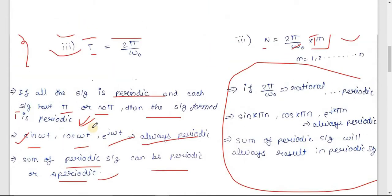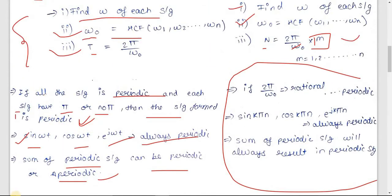To summarize for continuous time signals: first check if all terms are periodic. If so, use Rule 2 (sum of periodic signals can be periodic or aperiodic), then apply Rule 3 — if all terms are in the same format (all have π or all have no π), the signal is periodic; otherwise, it is aperiodic.